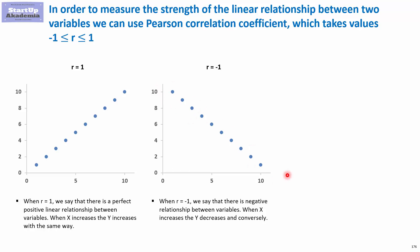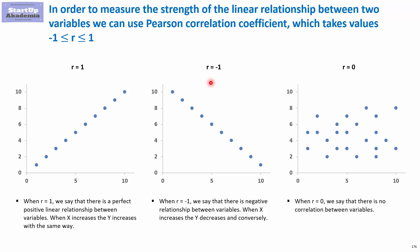If it's minus one, then again we have a perfect correlation, but this time around we have a negative relation — if one is increasing, the other one is decreasing with the same strength. And finally, if it's zero, it would mean that they behave in a totally different manner.